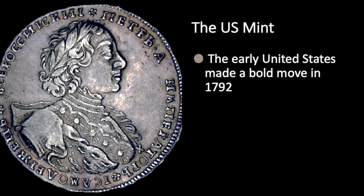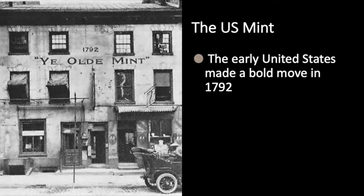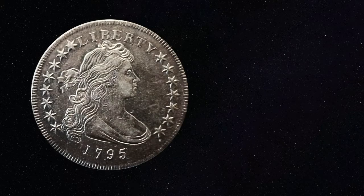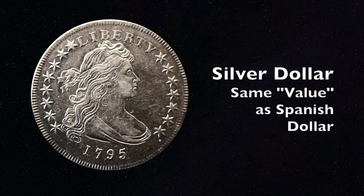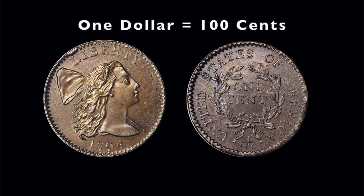Prior to this, only Tsar Peter the Great's Russia had adopted a decimal system for its coinage. Another innovation was that the US Mint would operate as a service to citizens — if citizens brought silver or gold to the Mint to be made into coins, the Mint would make them for free. And unusually, it would provide copper coinage as a public service. The new Mint made half dollars, quarter dollars, and smaller silver coins, but also thousands and thousands of copper cents, which were the mainstay of day-to-day transactions.